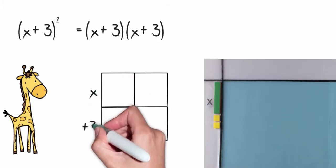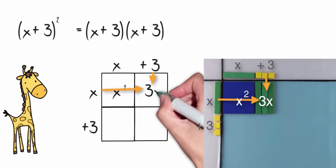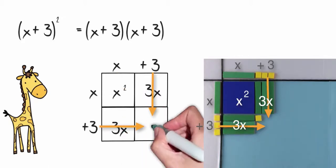Again, we'll set up our array. x times x, which is x squared, x times 3, which is 3x, 3 times x, which is 3x again, and 3 times 3, which is 9.